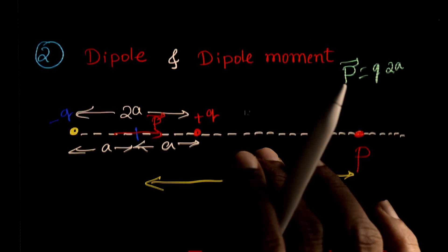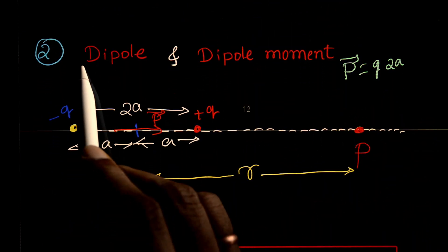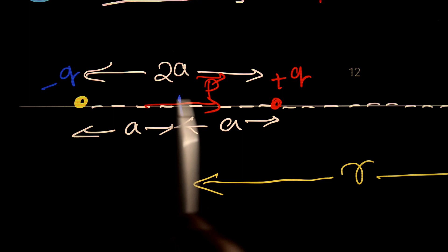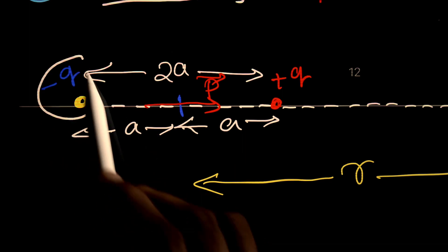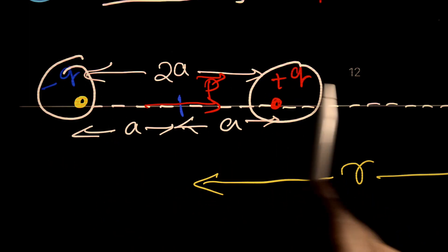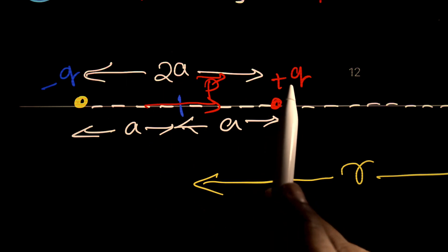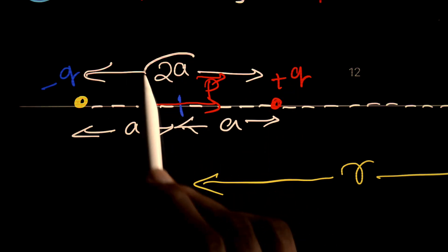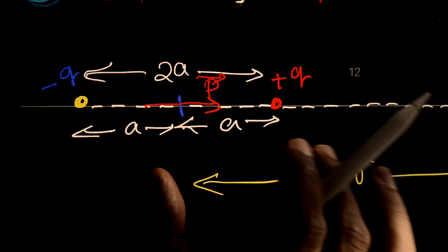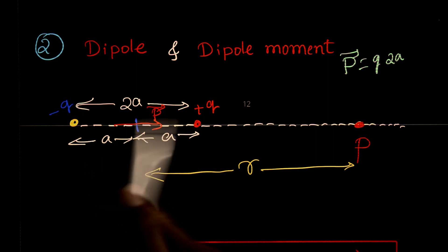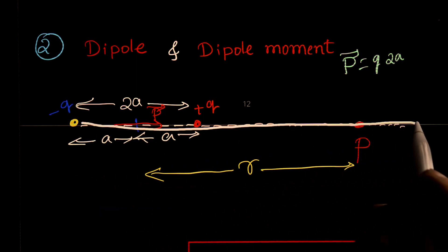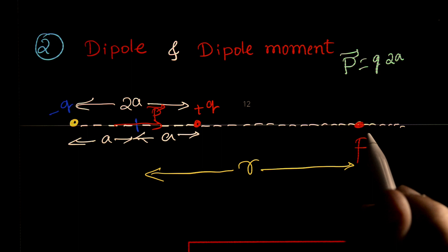Next, dipole. What do you mean by dipole? A dipole is a system of two charges — they are equal in magnitude but opposite in sign, separated by a small distance 2a. That is a dipole. This line is called the axis of the dipole, that is the axial line.